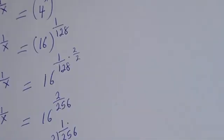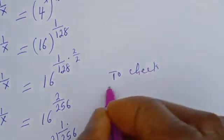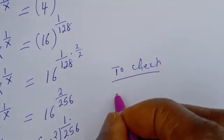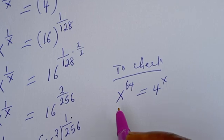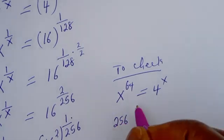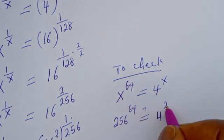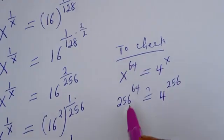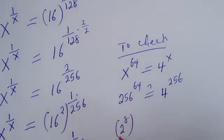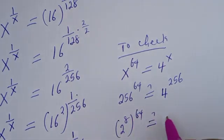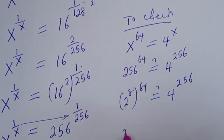Let's verify. We have the given equation: s to the power of 64 is equal to 4 to the power of s. Substituting s = 256, we get 256 to the power of 64 must equal 4 to the power of 256. This can be written as 2 to the power of 8, raised to the power of 64, must equal 4 to the power of 256.